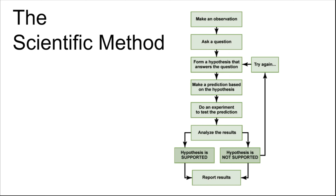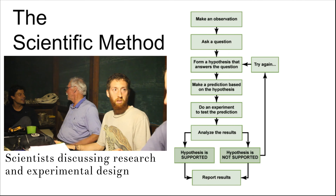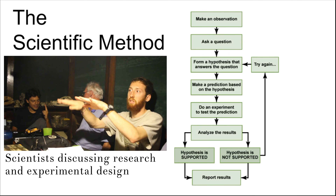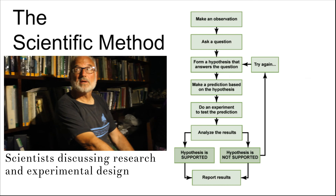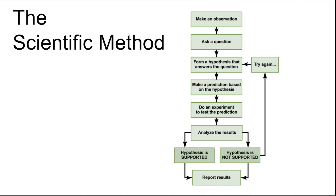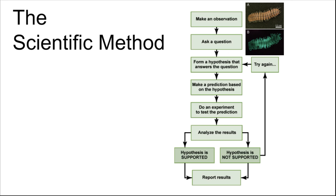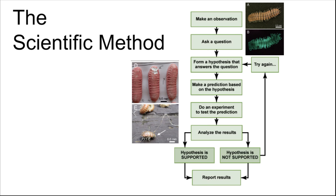This whole process makes up a framework we call the scientific method. We often present it as a flow chart, a very organized process, but it really is kind of messy. Generally speaking, it goes like this: you make an observation — these millipedes glow in the dark — then you ask a question — why do they glow in the dark — then you form a hypothesis, then you make a prediction based on the hypothesis — I predict that predators will attack a non-glowing clay model more than a glowing clay model.